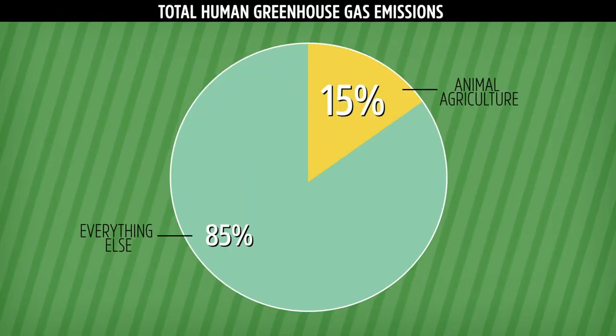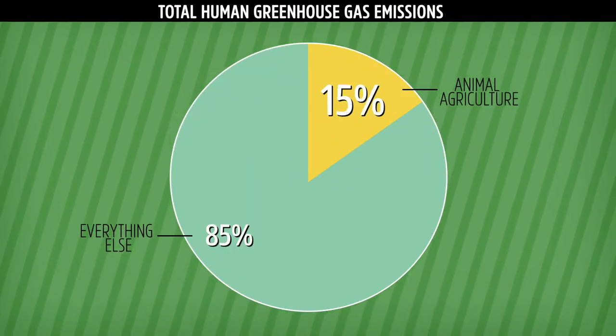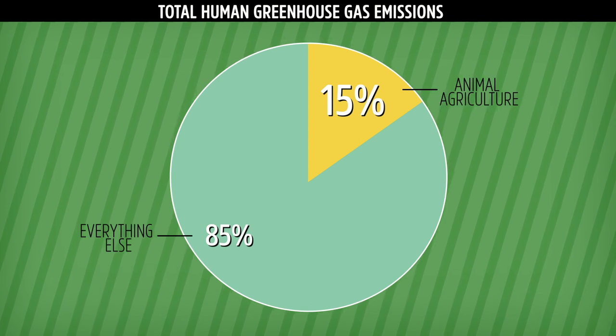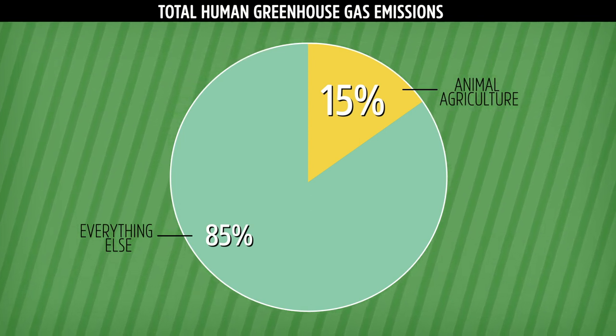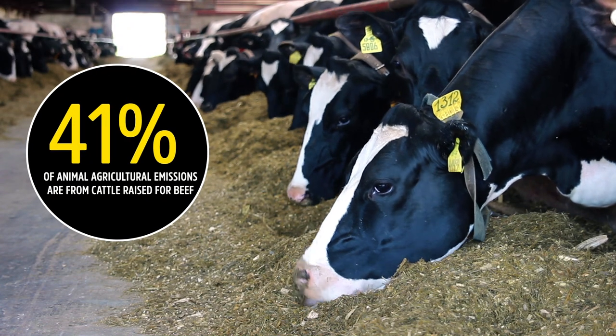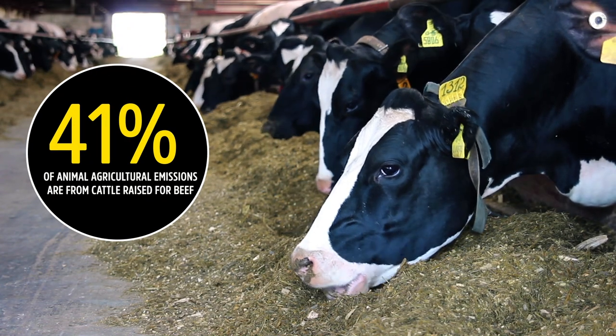A few years ago, a study by the UNFAO estimated that the total annual emissions from animal agriculture made up almost 15% of all human greenhouse gas emissions, and of that, 41% was attributed to cattle raised for beef. Knowing that people probably weren't going to give up beef altogether, scientists asked, how do we decrease the amount of methane cows are producing?